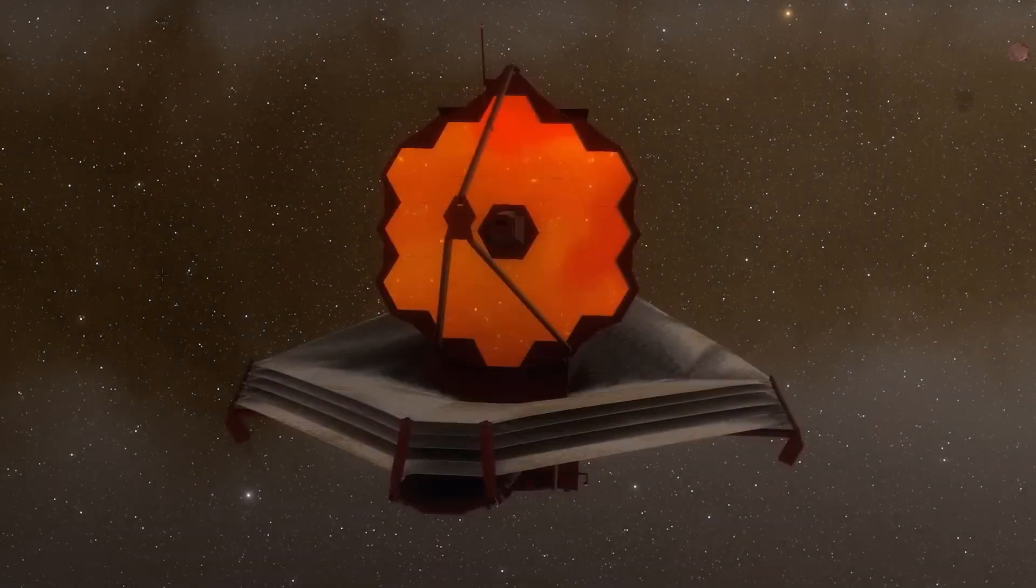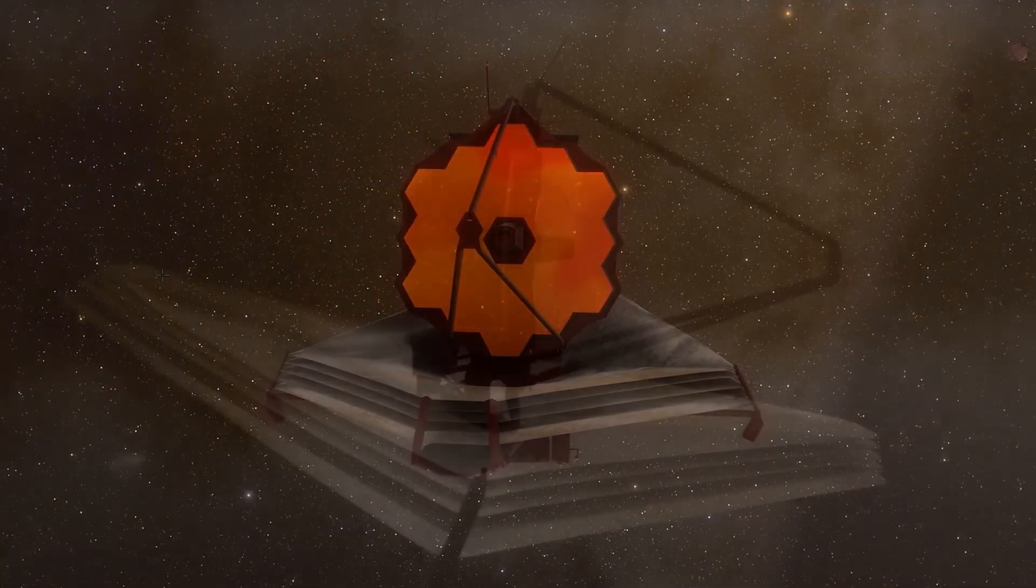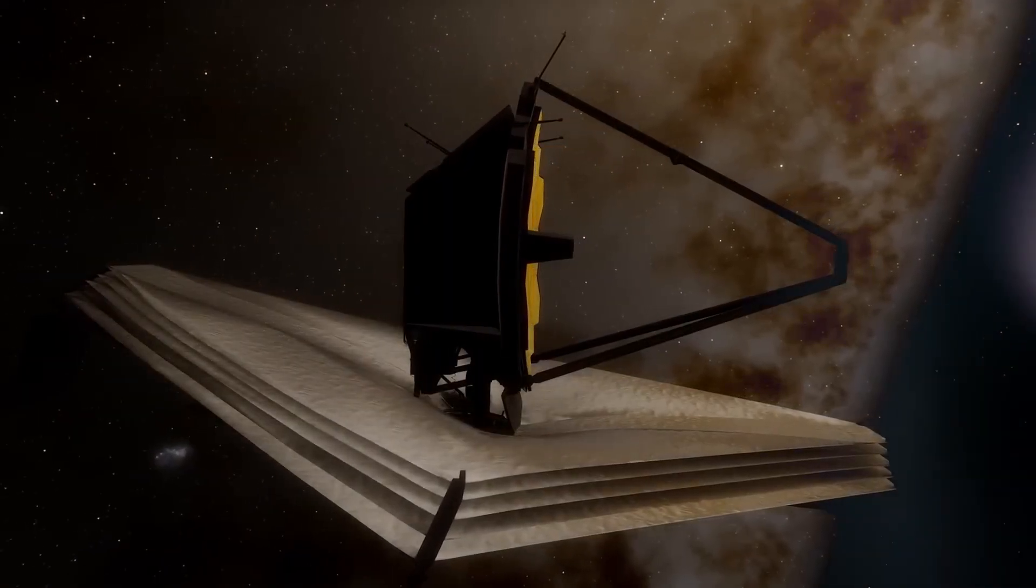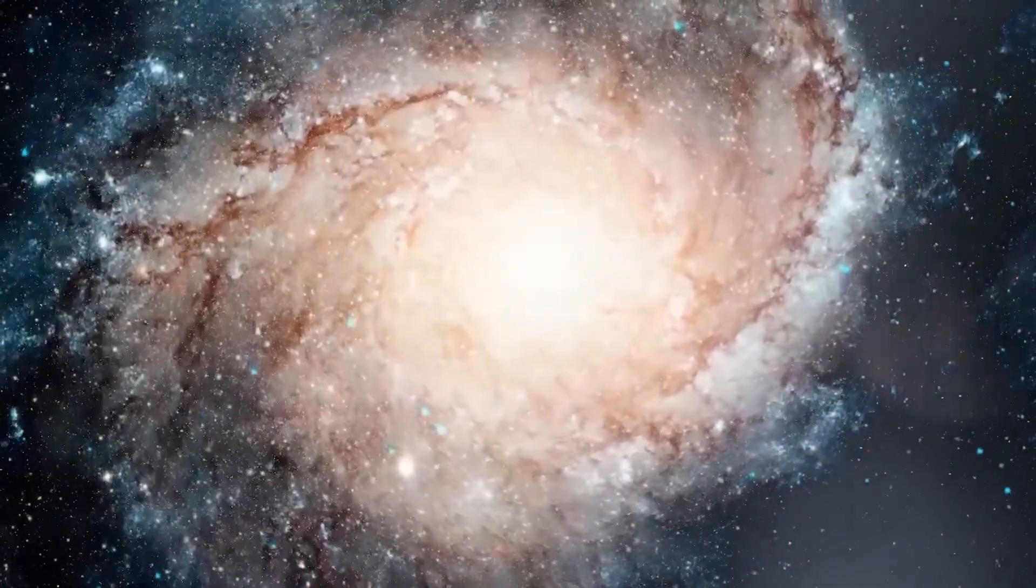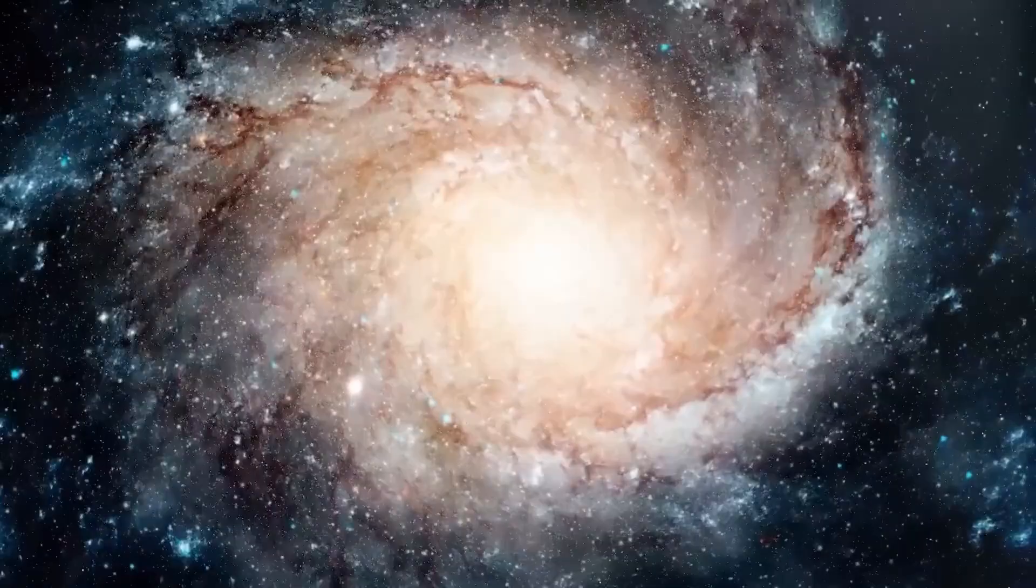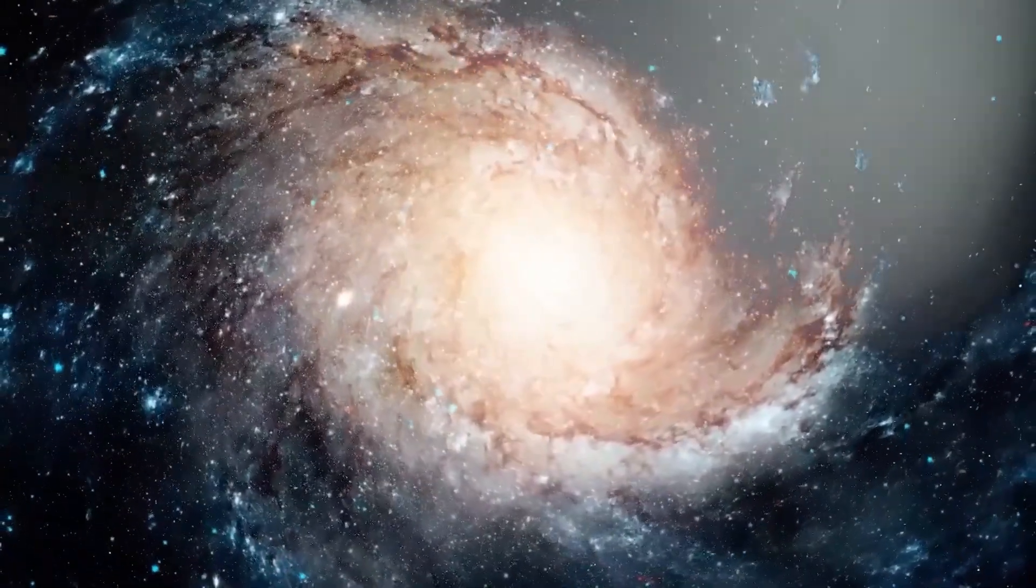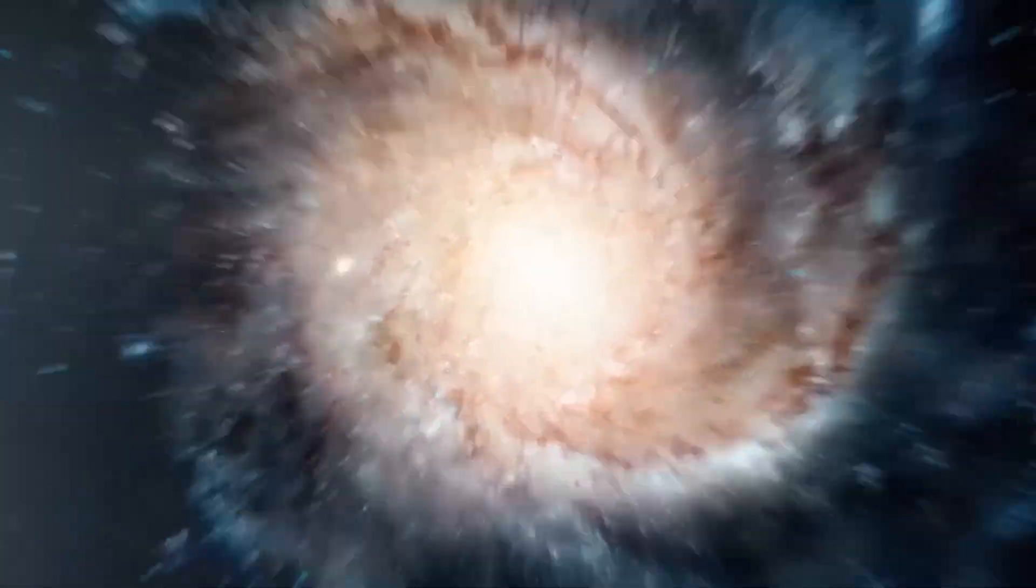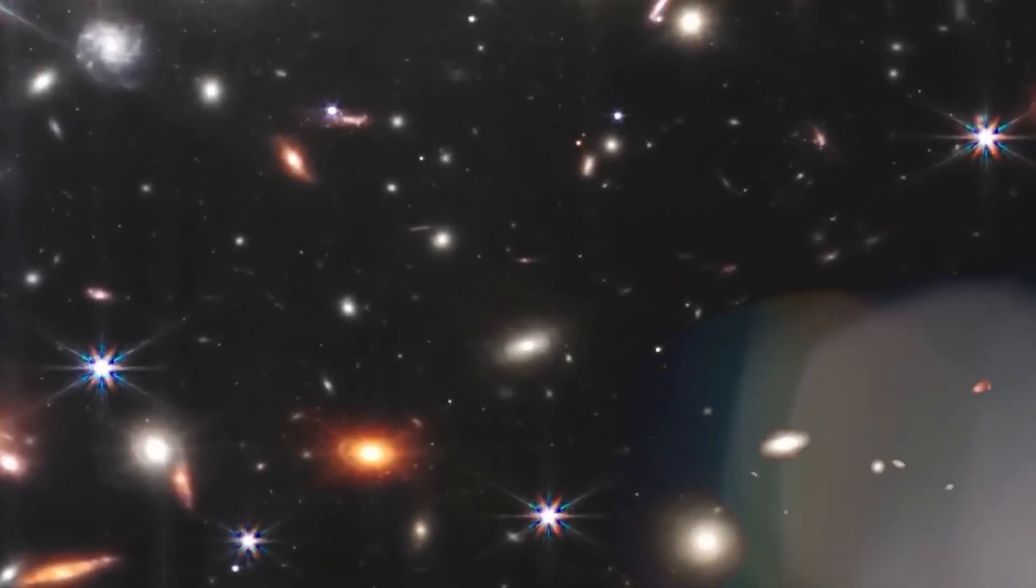But wait, it gets weirder. In one of Webb's scans, in a patch of space so ancient it was supposed to be sterile, the telescope picked up a chemical signal that stopped scientists in their tracks. Complex organic molecules. Not just simple stuff like methane, but polycyclic aromatic hydrocarbons, the kind of molecules that are building blocks for amino acids, the foundation of life. These weren't tucked inside a cozy planet or swirling in a star's atmosphere. They were floating free in the void, 13 billion years old, perfectly preserved.